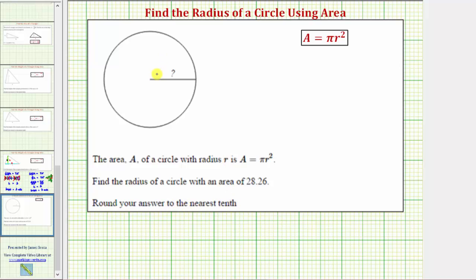So looking at our circle, this would be the radius, the distance from the center of the circle to the circle. Let's go ahead and label this r. So our goal is to find the value of r when the area is equal to 28.26.